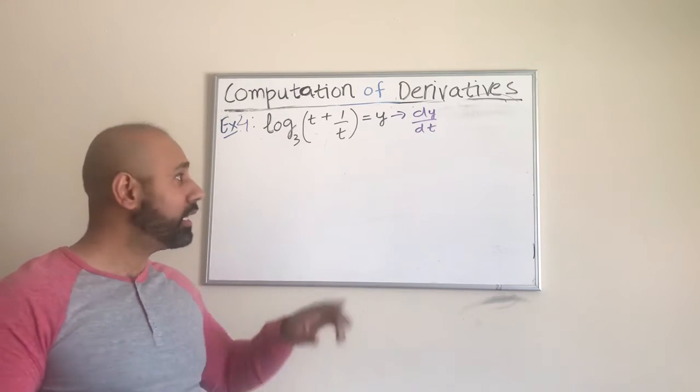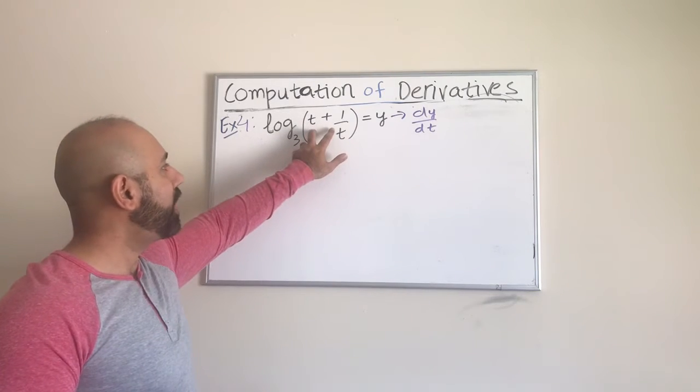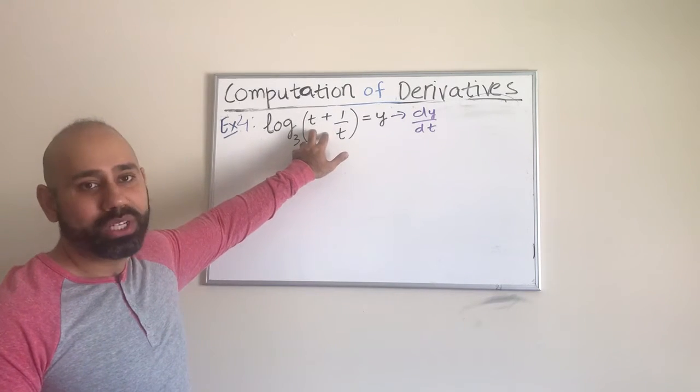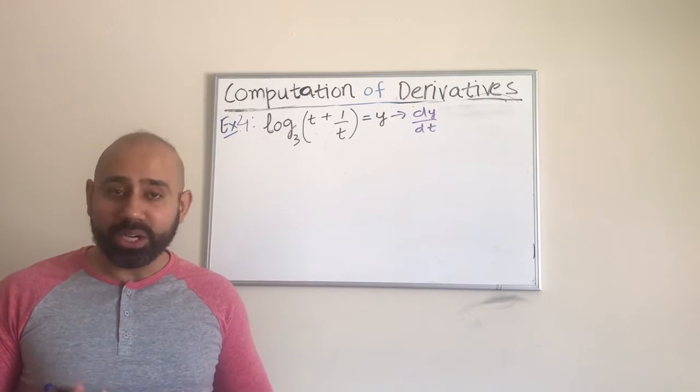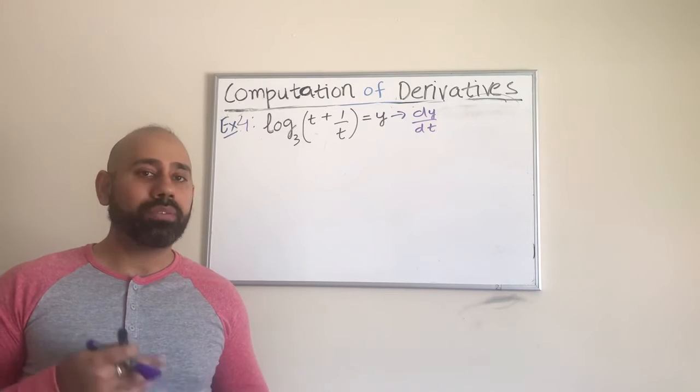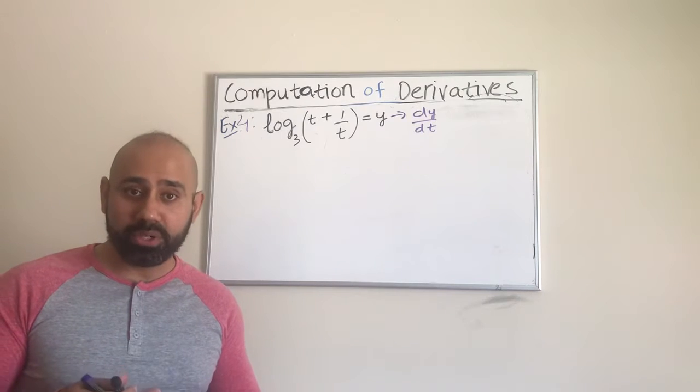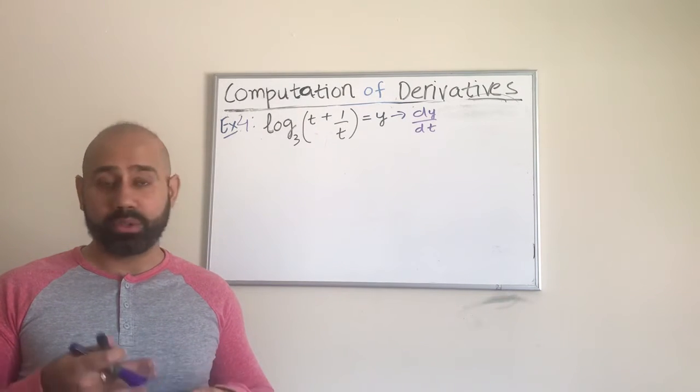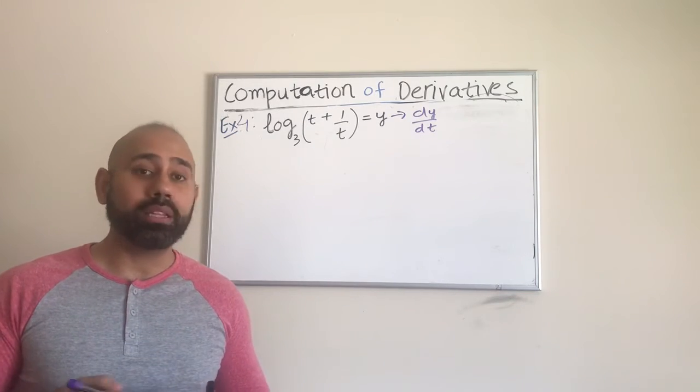That's not going to help us here because what do we have? We have log of the product, log of the quotient and log of the power. This is not the product. This is the sum of two. This is not a quotient. This is not a power. So we cannot use any of those log properties. If one cannot use the log properties, then one has to directly go into evaluating the derivative of the logs using the general formula for finding the derivative of ln of x or log to any base b or using the combination of chain rule and the power rule.